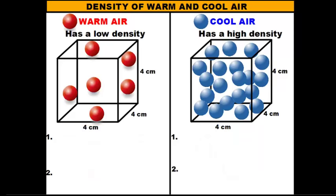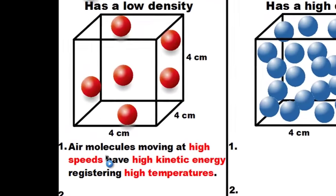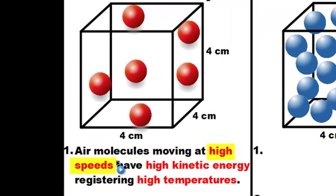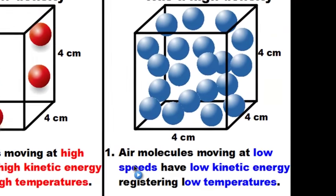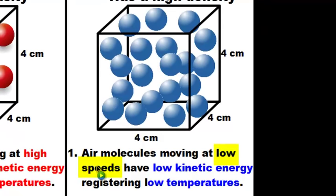The speed of the air molecules is what makes warm air feel the way it does. When we take the temperature of something, we're actually taking a reading on how fast the molecules are moving. Since warm air molecules are moving at high speeds, they have high kinetic energy, which means they're fast. And as a result, they register high temperatures. Whereas cool air molecules are moving at much lower speeds, so they don't have as much energy because they're not moving very much. And that low kinetic energy or energy of motion is going to register low temperatures on a thermometer.